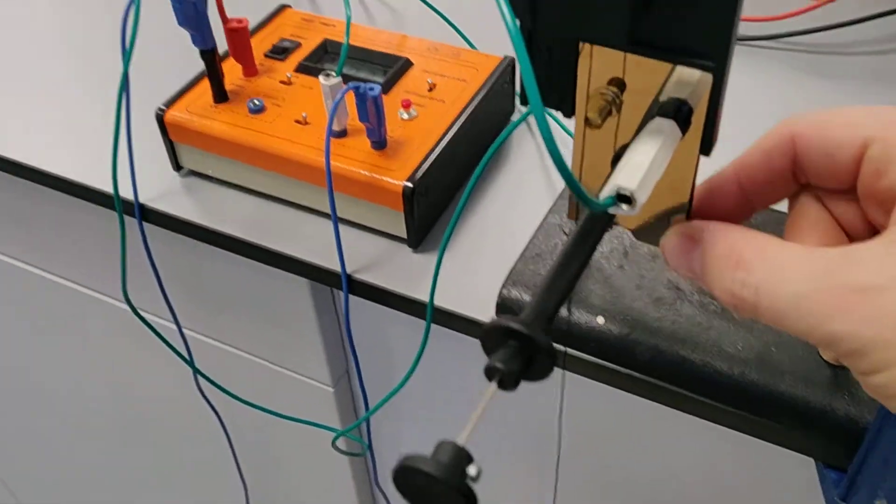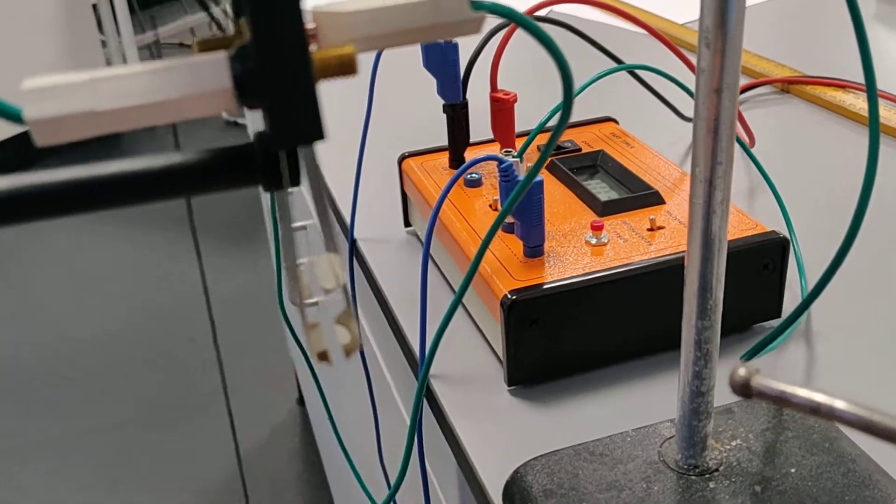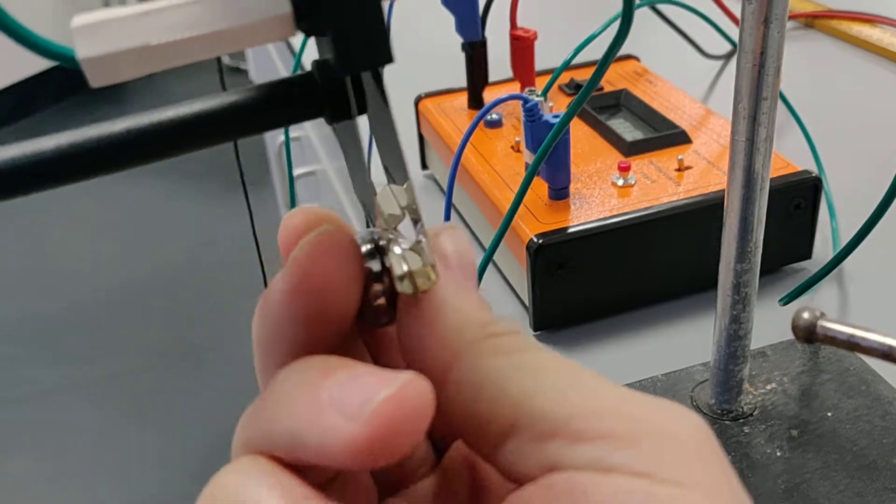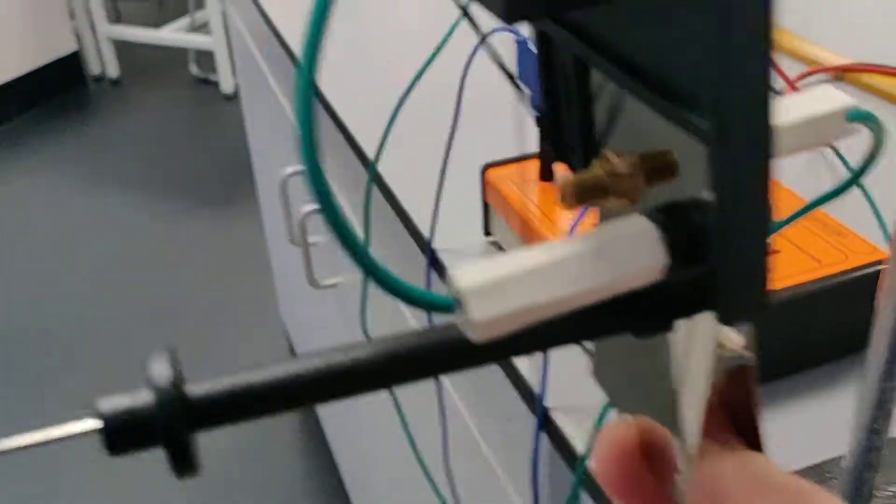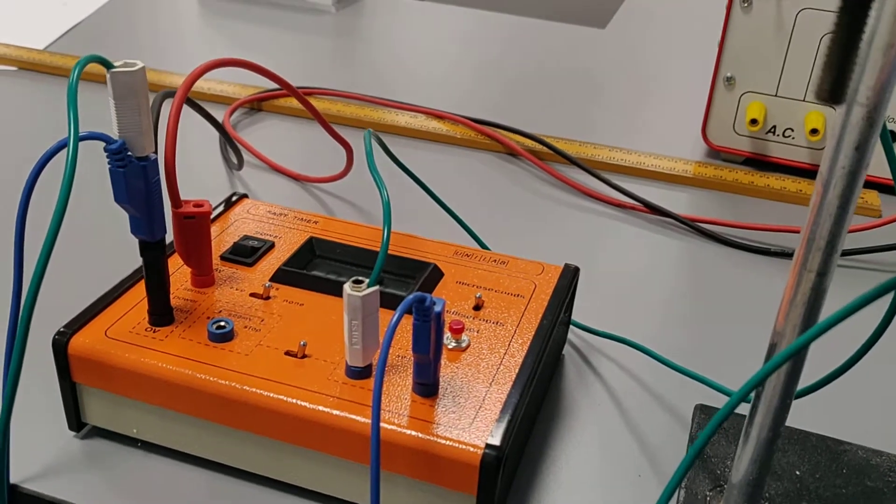Essentially it's got metal arms here. If I come around the side you will see the metal arms don't touch. When you put a ball bearing into the metal arms like this, it makes the connection and completes the circuit.